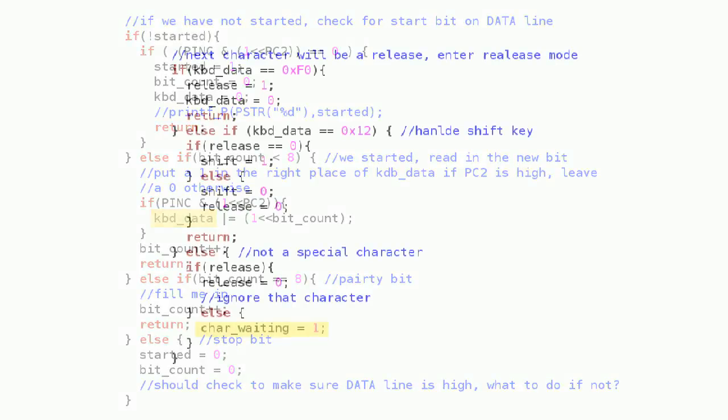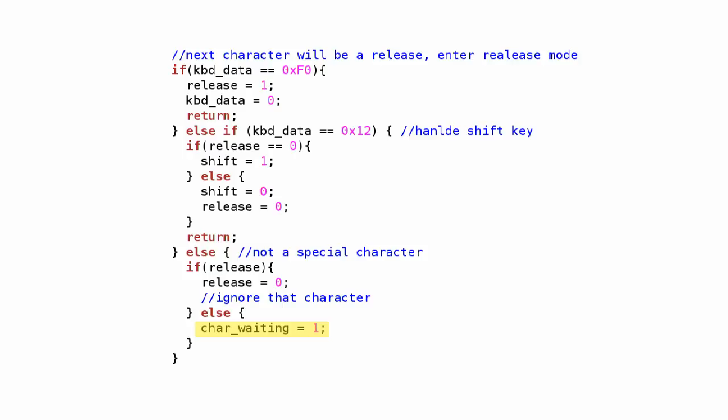Notice we also have a variable called char_waiting. This is used by the interrupt handler to let the main loop know when a character is ready to be read. When a character is ready, the interrupt handler flips this bit to high. When the main program reads the character, it flips it back. This is a common technique to communicate between interrupt handlers and the main program.